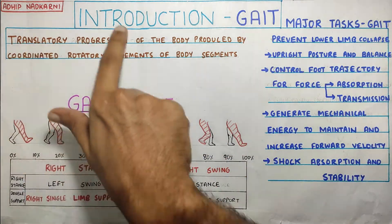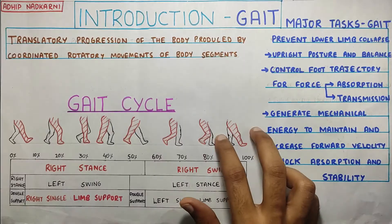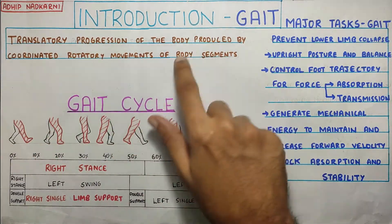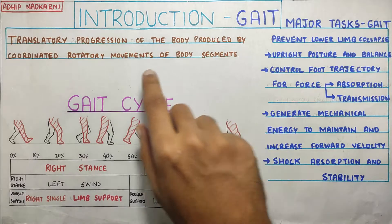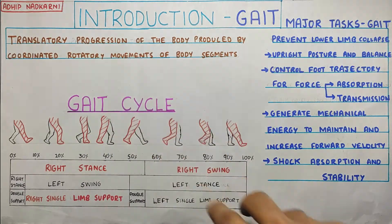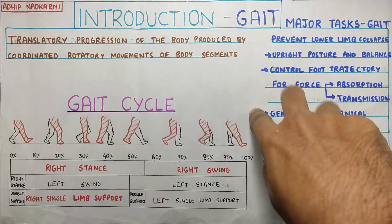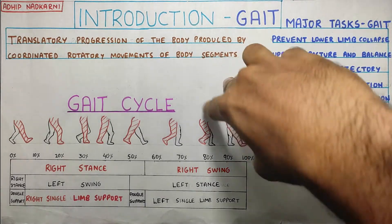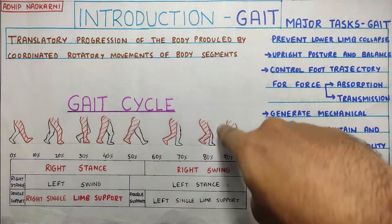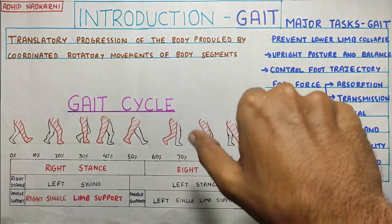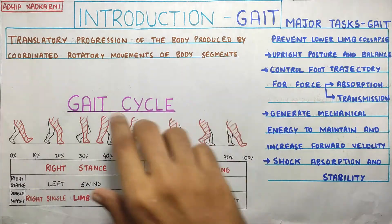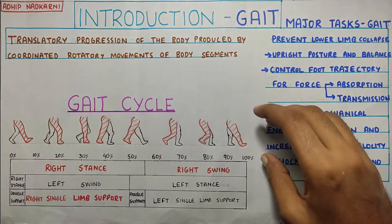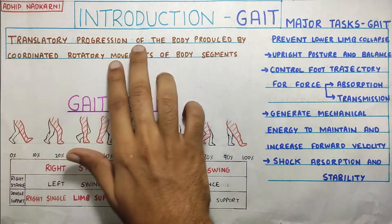Gait is a translatory progression of the body by coordinated rotatory movements of the body segments. Why rotatory movements? Because when you're walking, there is rotation of your trunk happening. Every time you take a leg ahead, that coordinated rotatory movement lets your body move forward in a translatory progression — and that is what gait is.